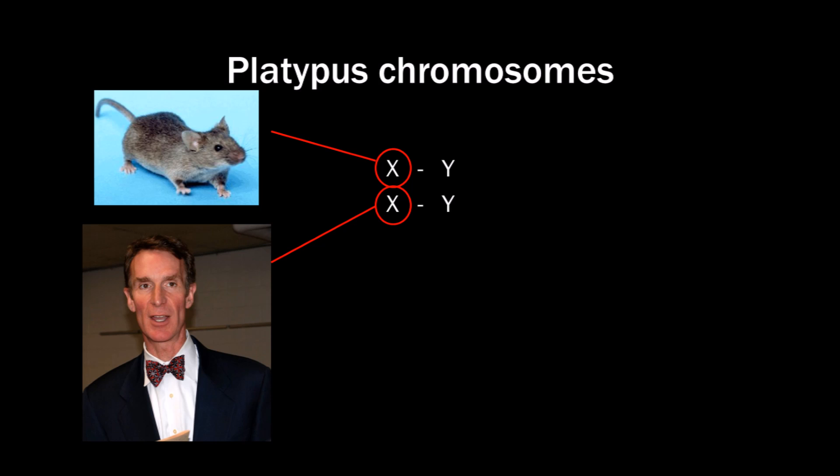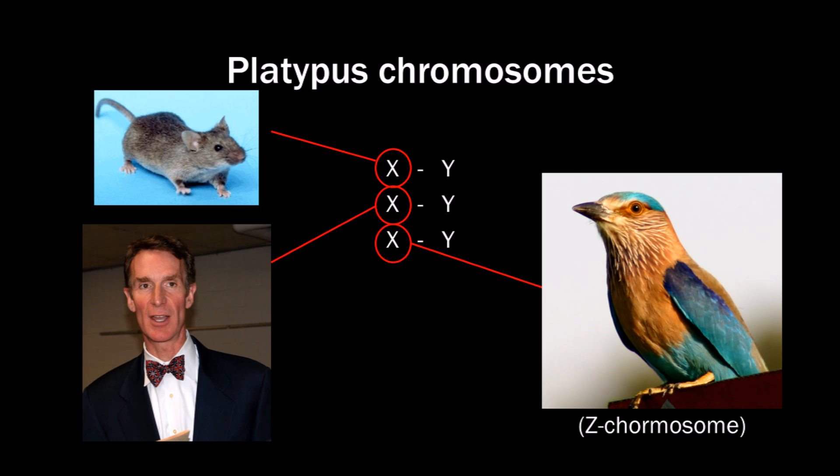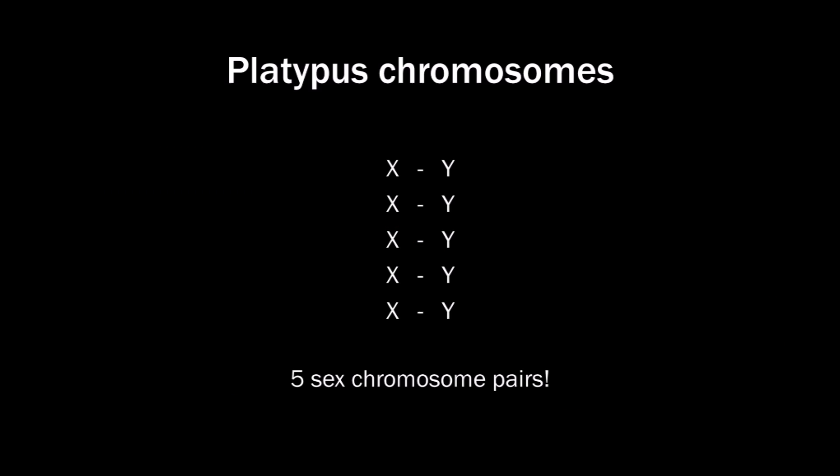To make it even stranger, the platypus has a third sex chromosome pair, of which the X is similar to that of birds, even though that is called a Z chromosome. The platypus even has a total of five sex chromosome pairs. How did that happen? And how did one of these get similar to that of mice, another to humans, and another to birds? How did that evolve?